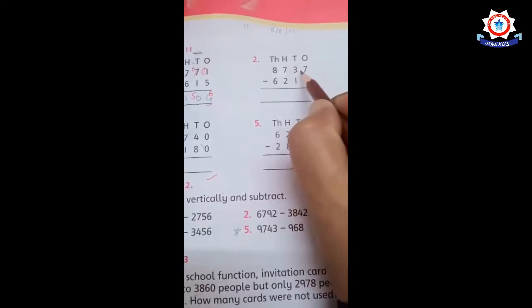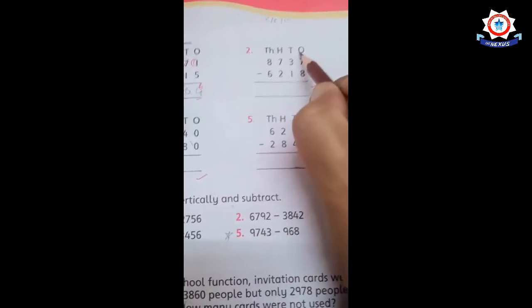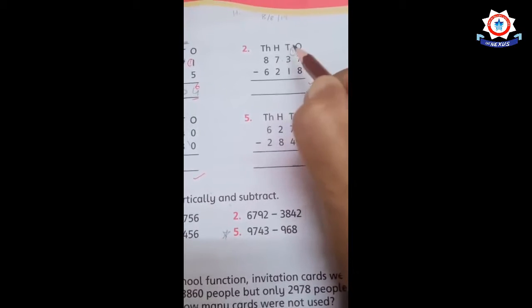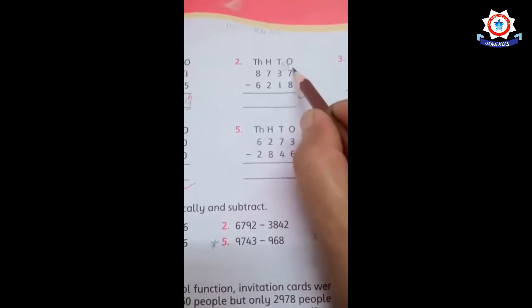You can write it in a circle so you can remember. Now, seven becomes seventeen. Some students say that,